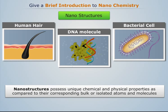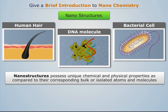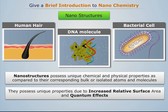Nanostructures possess unique chemical and physical properties as compared to their corresponding bulk or isolated atoms and molecules. They possess unique properties due to increased relative surface area and quantum effects.